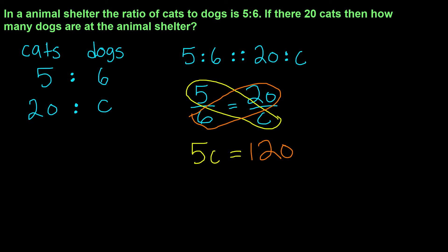Now we have to divide by 5 on both sides since we're multiplying by 5. We're solving for the variable and we have to get rid of the 5, so divide by 5 on both sides. The 5s cancel each other out, and we're left with C equals 120 divided by 5, which gives us 24. So 24 is our missing number.